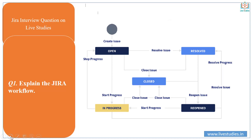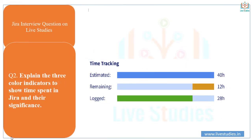My first question is: explain the Jira workflow. The workflow defines the series of stages an issue goes through during its life cycle, from when it is created to when it is closed. The workflow includes the creation of an issue, a series of actions performed to fix the issue, and finally the closing or completion of the issue after verification. The linking between two states is called a transition. An issue state defines the nature of the work that is completed by the tester.